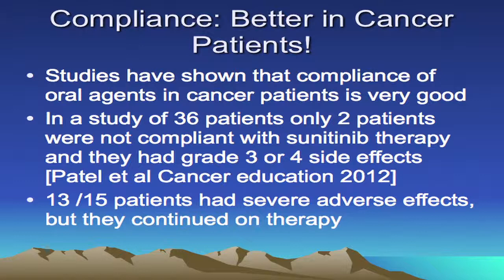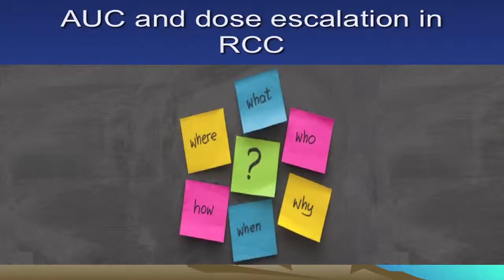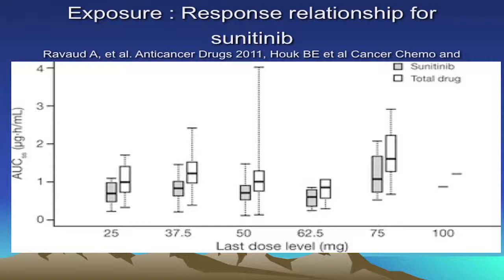The reason for non-compliance was toxicity — grade three or four toxicities. Interestingly, the other 13 patients who had similarly severe adverse events related to sunitinib actually continued on the same dose. What we find is that patients being treated for cancer stay remarkably compliant even in the face of significant toxicities.